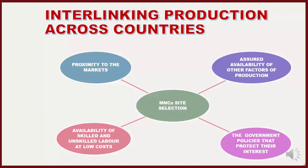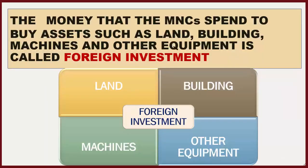Availability of other factors of production such as land, building, machines, etc., are assured to them, along with liberal government policies to protect their interests. The money that the MNCs spend to buy assets such as land, building, machines, and other equipment is called foreign investment.